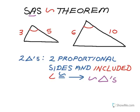Between the two triangles, if we have two proportional sides — two sides in one triangle proportional to two sides in the second triangle — and the included angle is congruent between the two triangles, then we have similar triangles.